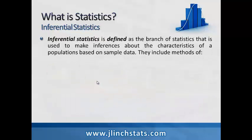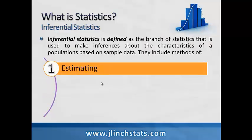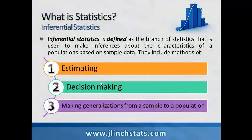Inferential statistics, on the other hand, is the branch of statistics used to make inferences about the characteristics of populations based on sample data. Typically we don't know what the entire population is all about, so we take representative samples of that population, and if our samples are good, we try to infer something about the population and make decisions. Inferential statistics includes methods of estimating, decision making, and making generalizations from a sample to a population, and it's used all the time in businesses and sciences.